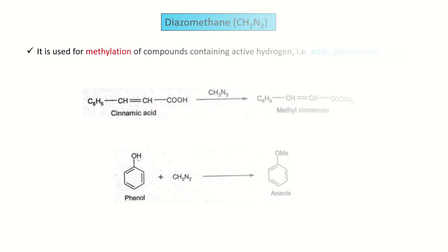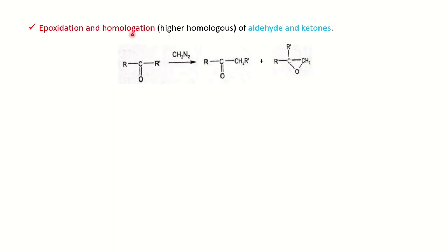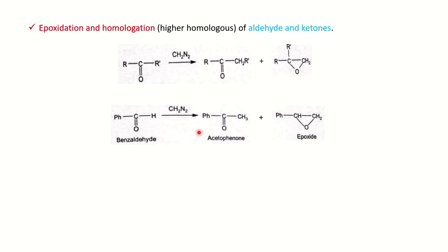We will see the mechanism shortly. Before that, we will see more applications: epoxidation and homologation of aldehyde and ketone. Homologation means extending the chain — increasing the number of carbons (homologous series). For a ketone in the presence of diazomethane, insertion of CH2 takes place between the C=O and R' group, forming a higher homolog. Epoxide formation also occurs as a side product. Similarly for aldehyde, hydrogen is converted to CH3, so the aldehyde is converted into a ketone, along with epoxide formation as a side product.